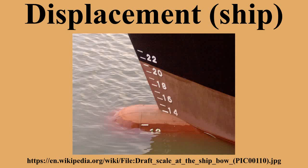Standard displacement, also known as Washington displacement, is a specific term defined by the Washington Naval Treaty of 1922. It is defined as the displacement of the ship complete, fully manned, engine and equipped ready for sea, including all armament and ammunition, equipment, outfit, provisions and fresh water for crew, miscellaneous stores, and implements of every description that are intended to be carried in war, but without fuel or reserve boiler feed water on board.